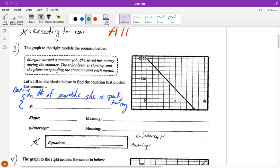So you are defining what this variable means in the context of this problem. So for X, it says she saved her money during the summer. The school year is starting. She plans on spending the same amount each month. So for this, we have to say, okay, well, she has money and we have time of months. Well, which one's independent? And since time is always independent, that is our independent variable, which is our X.